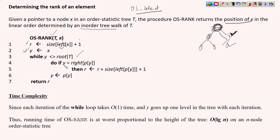If Y is not the root, we check whether Y is the right child of its parent. If it is a right child, we need to update the rank: we take the previous rank and add to it the size of the left child of the parent Y — the sibling — and then add one, giving a new rank. If Y is the left child of the parent, we simply keep moving upward without changing the rank.